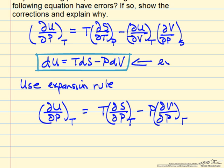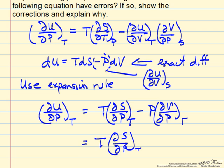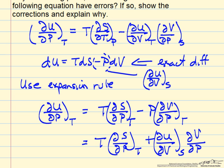This is an exact differential, which means this term is the partial of U with respect to V at constant S. Therefore, we can replace -P by the partial of U with respect to V at constant S, and then partial of V with respect to P at constant T.